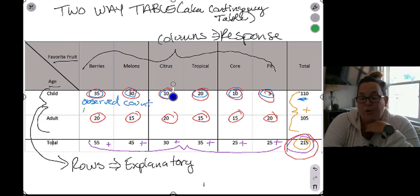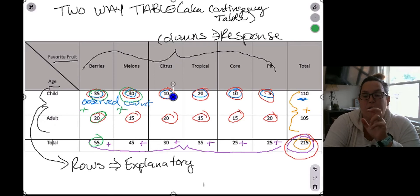Also, you'll notice that each observed count sums to the total in that column. So 35 plus 20 gives you 55, 30 plus 15 gives you 45, and so on and so forth. So hopefully this helps you to understand contingency tables a little bit more.